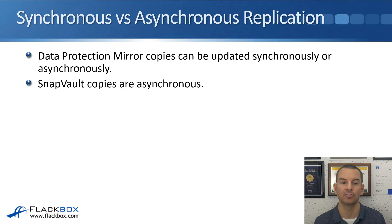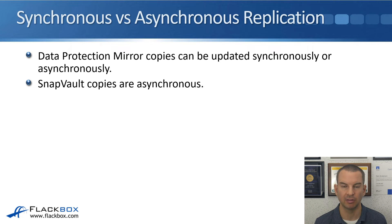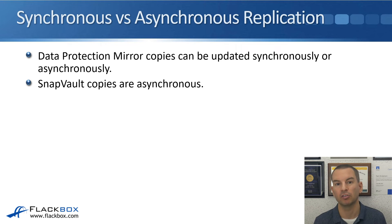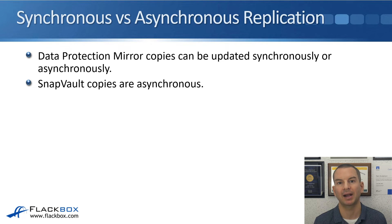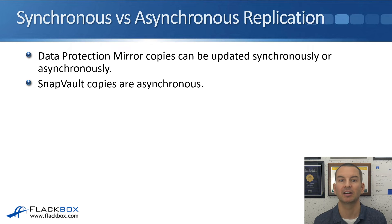In ONTAP, data protection mirror copies can be updated either synchronously or asynchronously — you choose when you set up the mirror relationship. SnapVault copies are always asynchronous. Data protection mirrors are used for disaster recovery, so we want the most current data possible. SnapVault is used for backups going back over time, so if data gets corrupted or accidentally deleted, you can restore from an earlier copy on the destination. There is no reason for SnapVault replication to be synchronous, so it is always asynchronous.